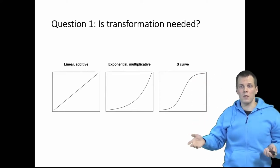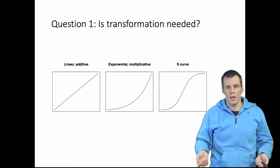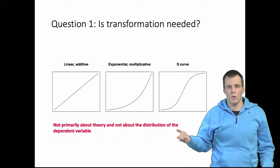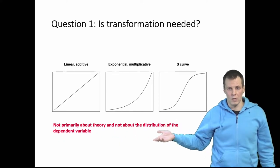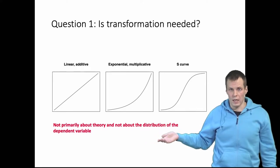So this is a question that is about theory and what kind of relationships you expect. It's not about the question of how the dependent variable is distributed. So this is primarily a modeling decision not a data decision.